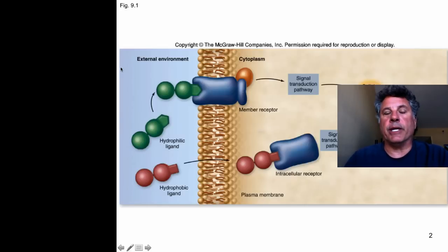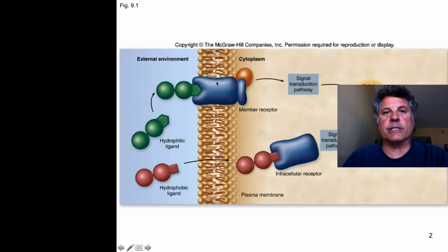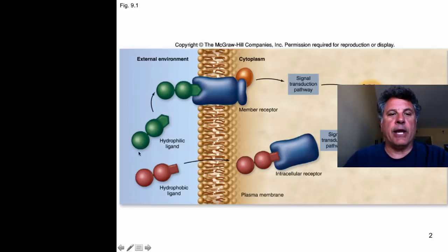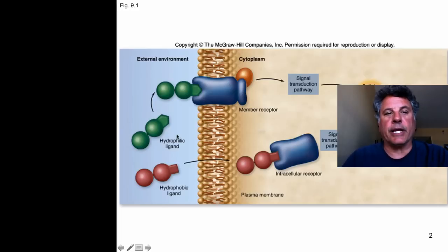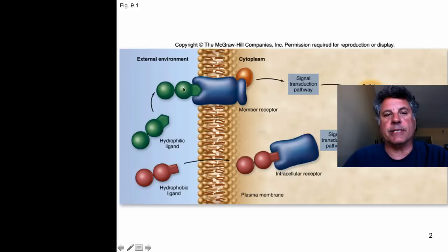In general terms, we can refer to cell communication as the ability of a cell to sense signals coming from other cells, and these are usually mediated by receptors. If we talk about the components of cell communication, we need to talk about a signal — usually an extracellular signal — that can either be hydrophilic and be bound by a receptor embedded in the plasma membrane, or can be hydrophobic, which can enter the cell directly by passing through the phospholipid bilayer.